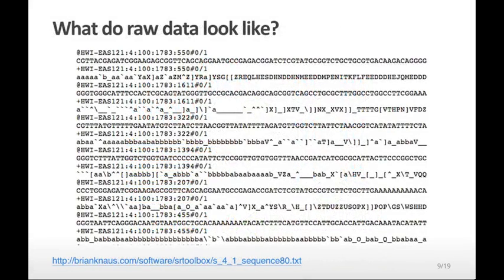So what do raw data look like? These are an example of those short fragments that might come off of a DNA sequencing machine. It's a short sequence of letters of A's, C's, T's, and G's, and above it some information about the quality of those letters. This information is very hard to process and analyze directly as it is, and is often processed a step further before humans actually interact with it.